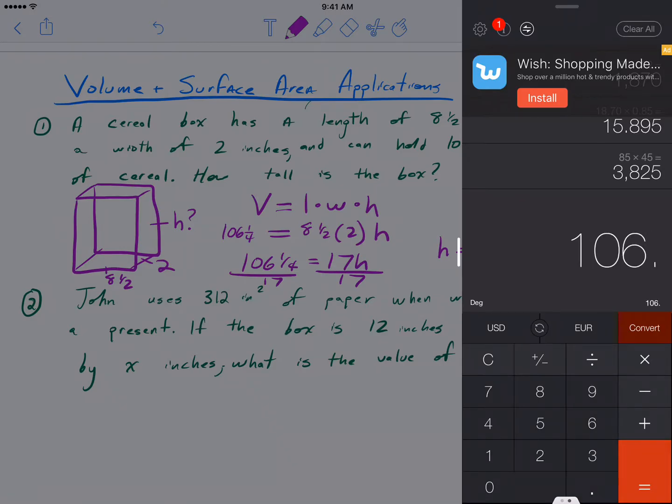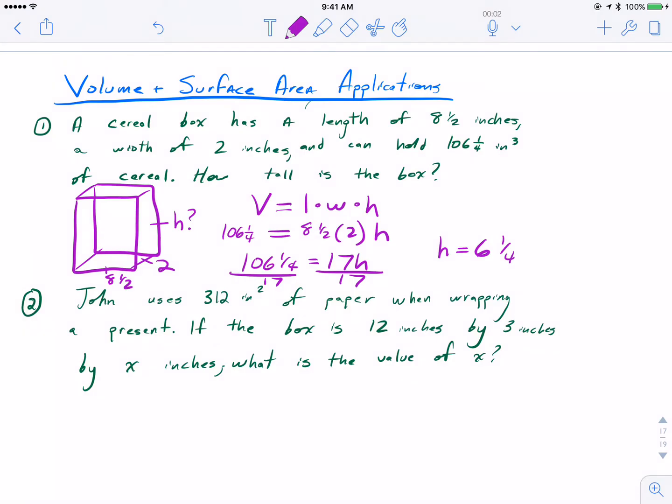So 106.25 divided by 17 is 6.25 or six and a quarter. You wouldn't be expected to do that type of division in your head, but if that one-fourth wasn't there, we could divide it out with or without a calculator. So the missing height here is six and one-quarter inches. Then you could always check it out, multiply all three dimensions again, and just check that you get 106.25.